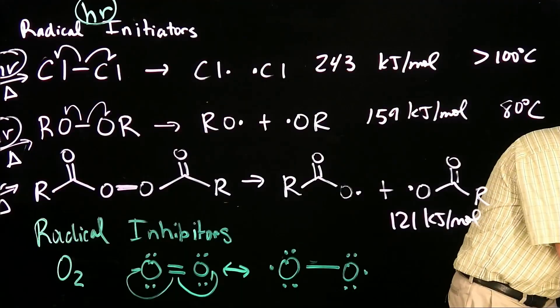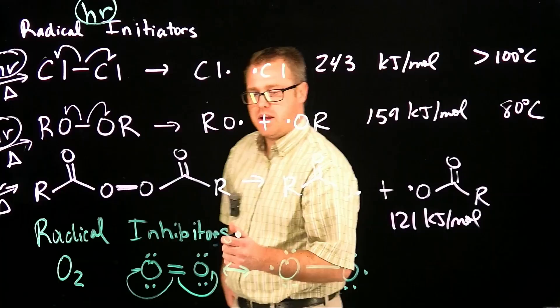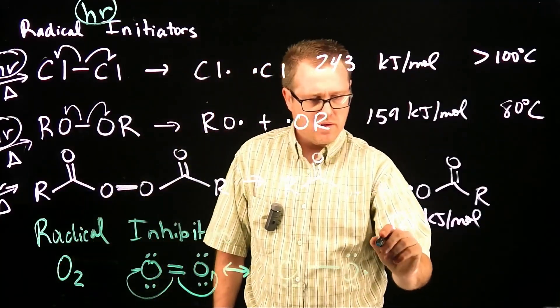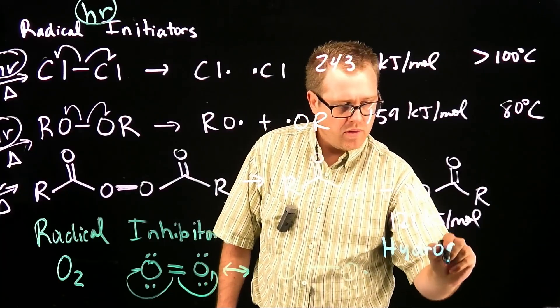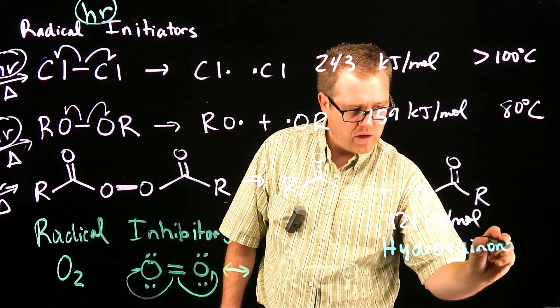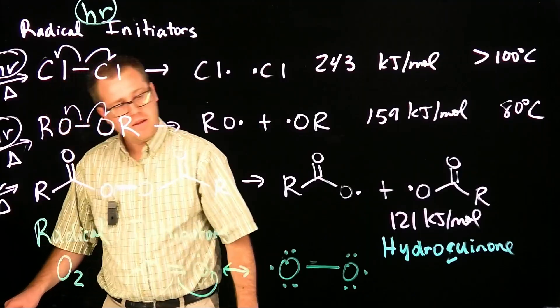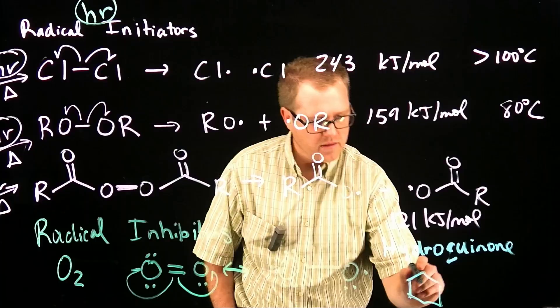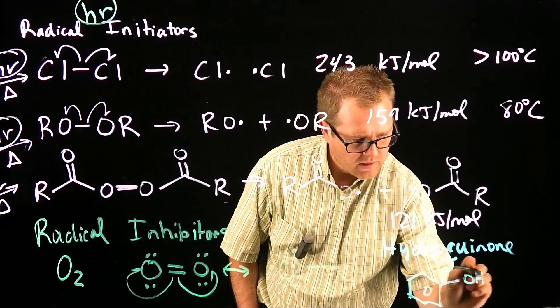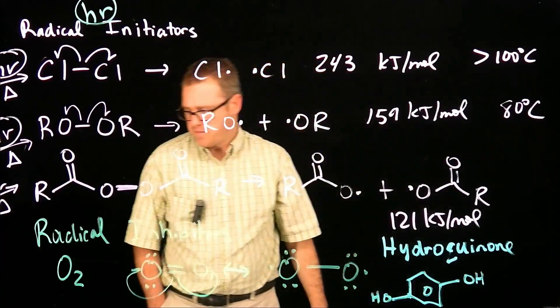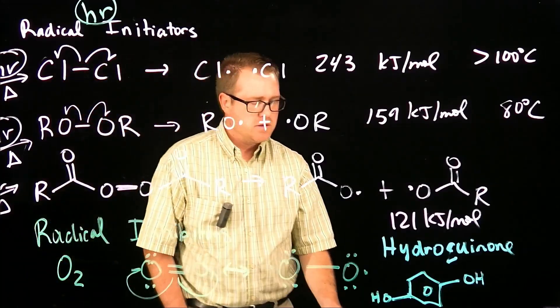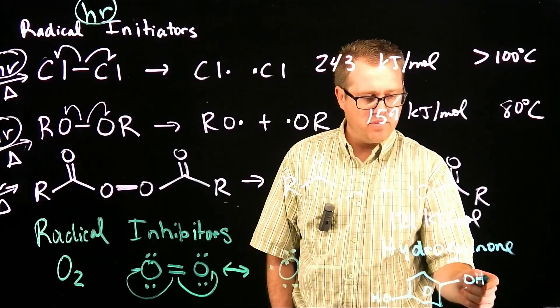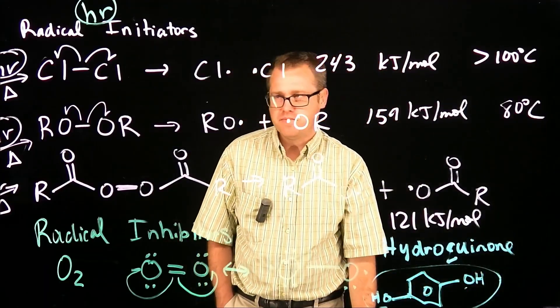Another inhibitor that's commonly used is the hydroquinone. Let's draw what that is. Another radical inhibitor. We'll put it right here. Hydroquinone, like that. And the way that molecule looks, I think I can get it down here. Like that. We have a benzene ring with two alcohols attached to it. So that's hydroquinone. Just know that that is a radical inhibitor.